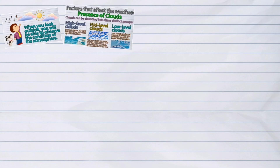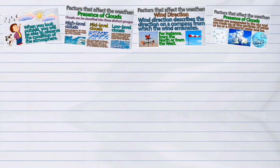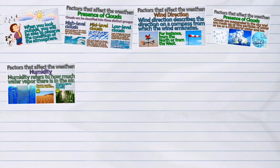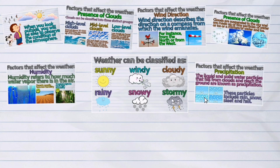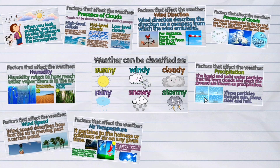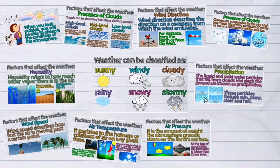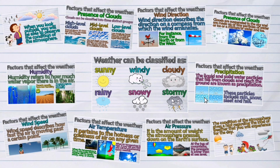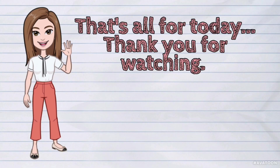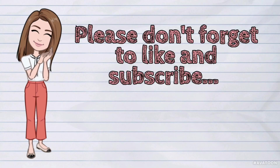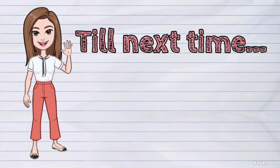And that was the definition of weather. Again, the weather is the short-term condition of the atmosphere of a particular place. That's all for today. Thank you for watching. Please don't forget to like and subscribe. Till next time. Bye bye.